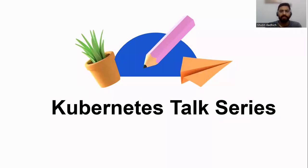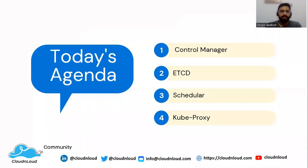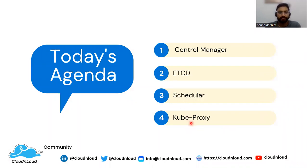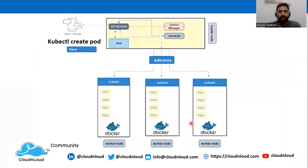Hello and welcome to the Kubernetes talk series. Today's agenda for the video will be about the fifth component of the Kubernetes architecture — that is kube-proxy. Kube-proxy is a component of the Kubernetes system that provides network processing for service requests to the appropriate backend pods.